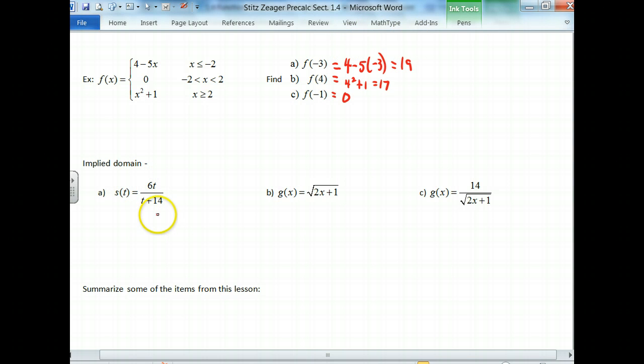For this function right here, where is the problem? Well, division by 0 is our problem. So for this one, really, t cannot be negative 14. If t is negative 14, then our denominator becomes 0. Doesn't matter what happens in the numerator, just the denominator. So if t is negative 14, we have a problem. We can't divide by 0. So when we talk about our domain, our domain is all reals except for t cannot be negative 14.